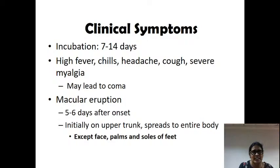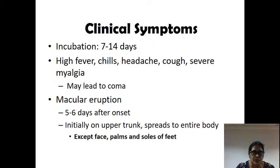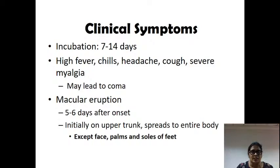Coming to the clinical symptoms: epidemic typhus presents with high fever. Being a Rickettsial infection, there will be eruptions or rashes. The rash appears after about five days from onset and is present on the upper trunk. A distinguishing factor between other fevers and epidemic typhus is the rash distribution. Along with fever, there will be severe myalgia, and the organism even spreads to the brain, leading to stupor — which is why it is called typhus. Severe myalgia causes patients to acquire a typical bending posture, which is typically described in epidemic typhus.